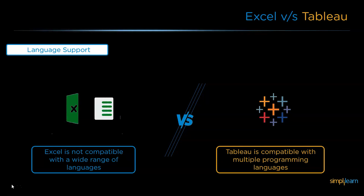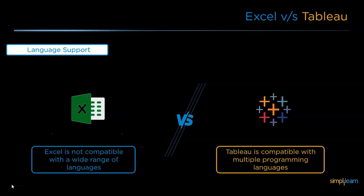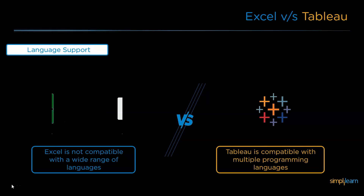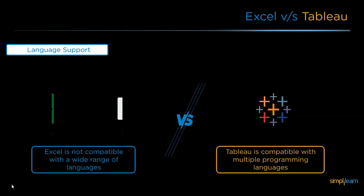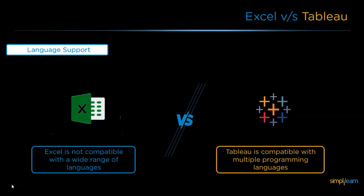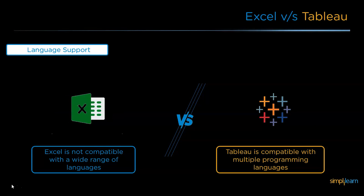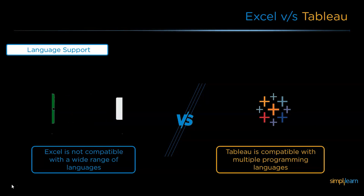Followed by capacity, the next major difference between Excel and Tableau is language support. Microsoft Excel has limited compatibility with programming languages; it can support only C# and C++. Whereas Tableau is compatible with a wide range of programming languages like C++, C#, Python, R, etc.